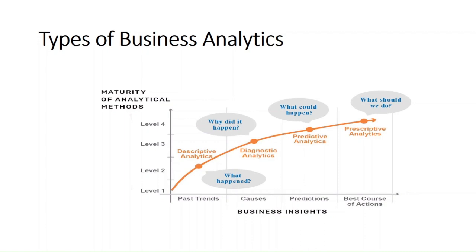Predictive analytics answers the question: what could happen? The focus is on prediction. It is used by executive levels and determines the probability of future events using historical data. Examples include predicting customer preferences when introducing a new product or entering a new market. Recommendation algorithms that suggest products also rely on predictive analytics. It can also detect employee mindsets, predict staff and resource needs, and predict customer churn.